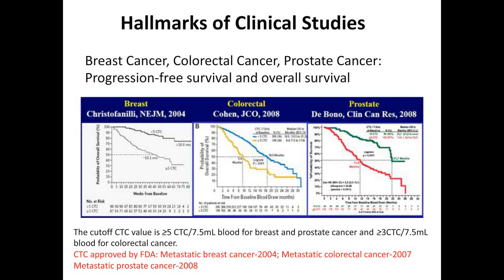Let me highlight the milestone studies that led to FDA approval. The FDA has approved CTC assays for three cancer types: metastatic breast cancer in 2004, metastatic colorectal cancer in 2007, and metastatic prostate cancer in 2008. The CTC cutoff is five or more CTCs per 7.5 mL of blood for breast and prostate cancer, and three CTCs for colorectal cancer.